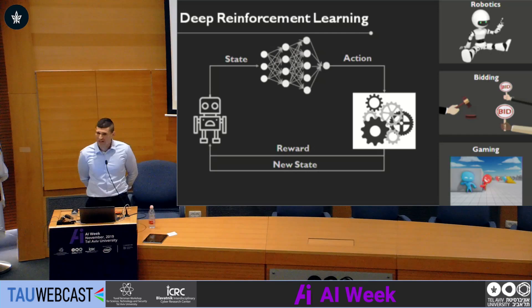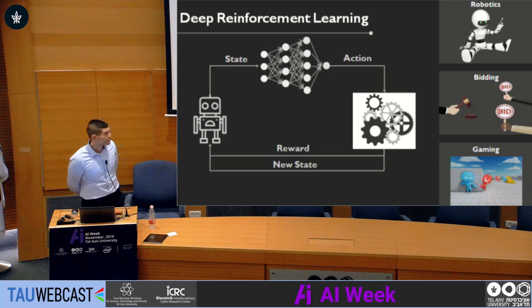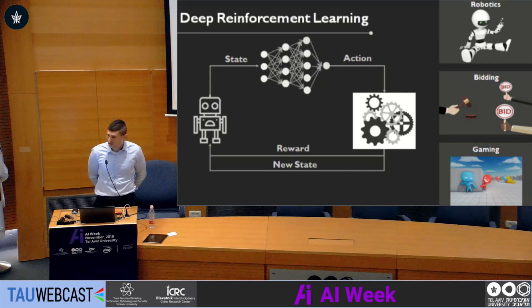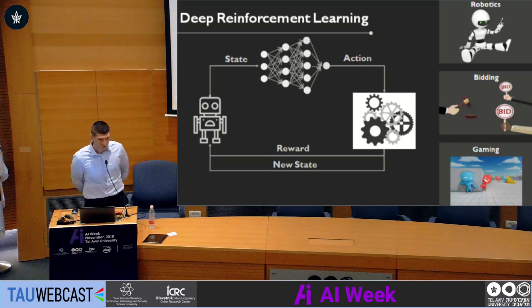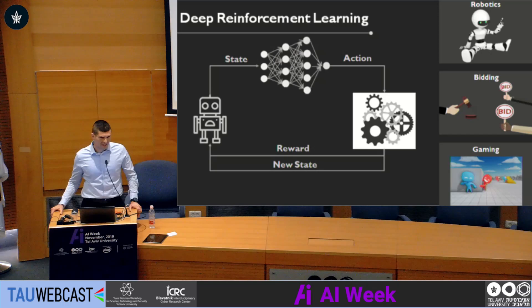Let's look at this illustration to elaborate. We have the agent, which has its state and a policy based on a neural network. The policy tells the agent what action to take for any state it is in. When taking an action, it is executed in the environment, which produces two values: the new state of the agent, and the reward. The reward tells the agent how good or bad its action was. I'll show you a short video of how reinforcement learning was implemented in the field of gaming.